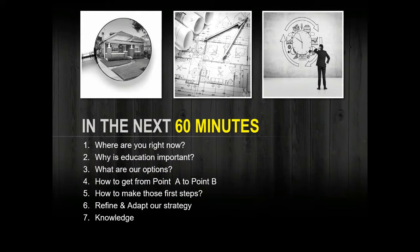We're going to start with where you are right now — really understand what got us to where we are and what that means for getting to the next stage. Then we'll discuss the importance of educating ourselves and what we need to know to get to where we want to go. We'll examine our options based on where we are and our level of knowledge and experience, and then decide on the direction — the best way to get from point A to point B in the shortest possible time with the least amount of risk.